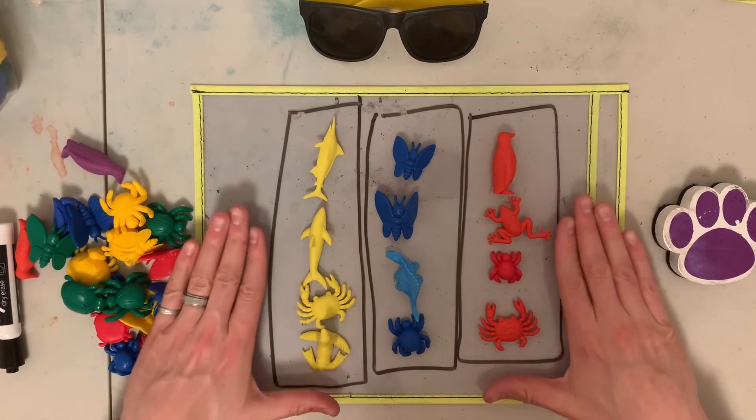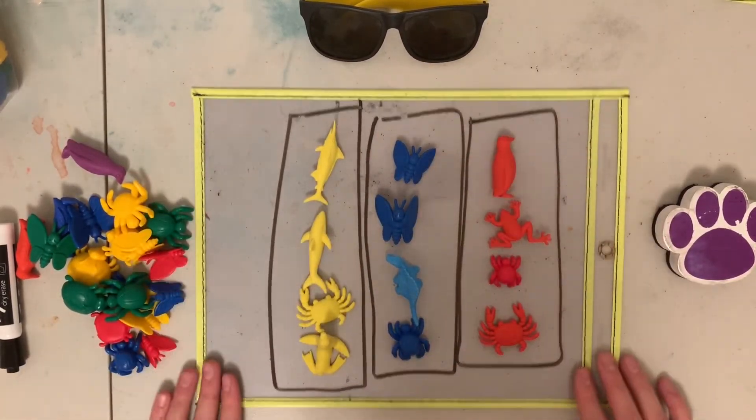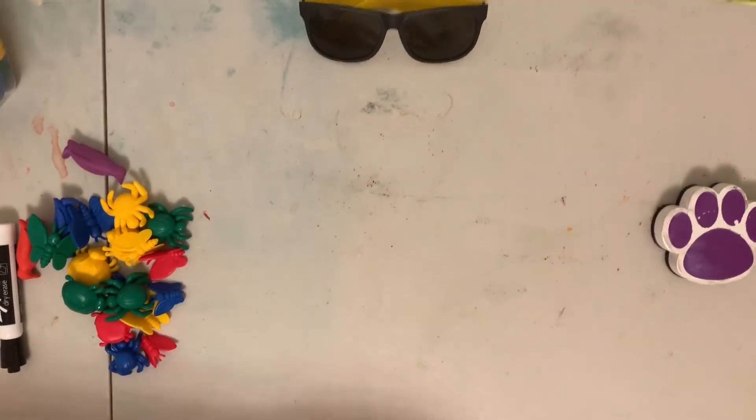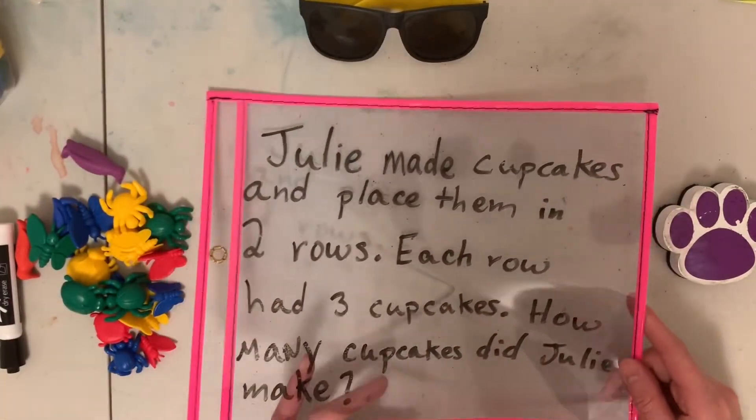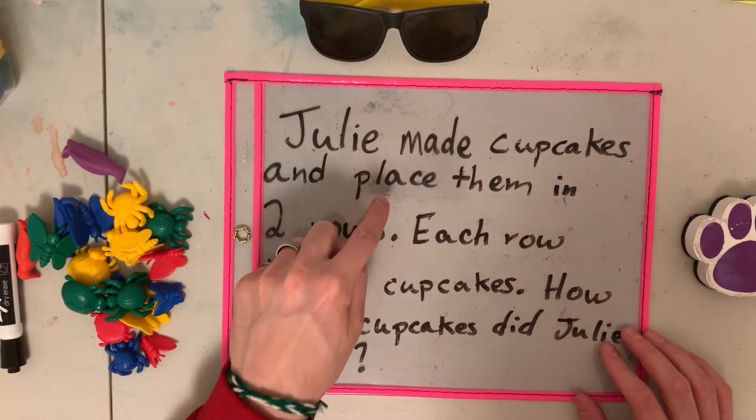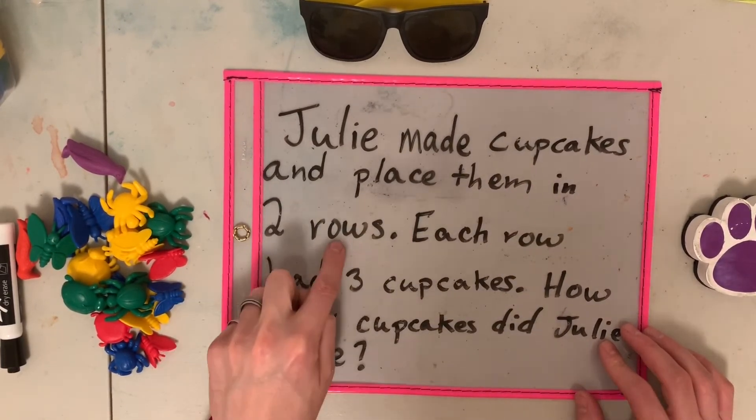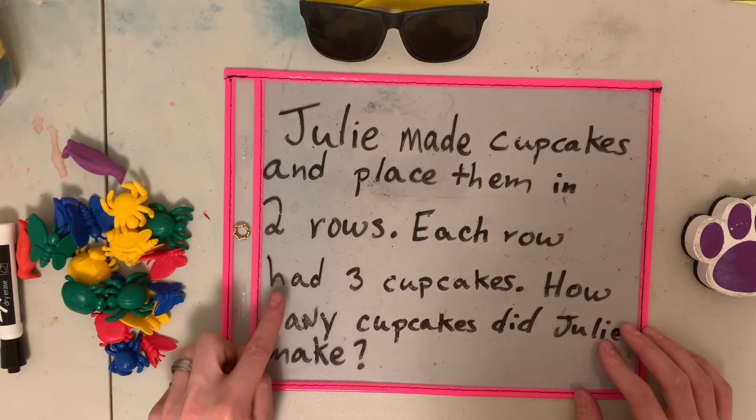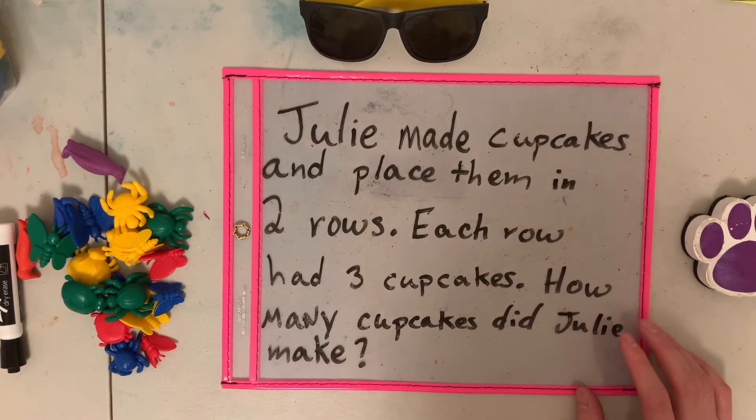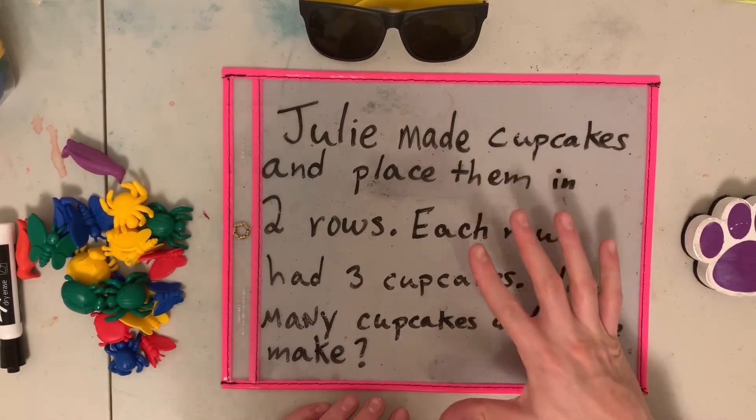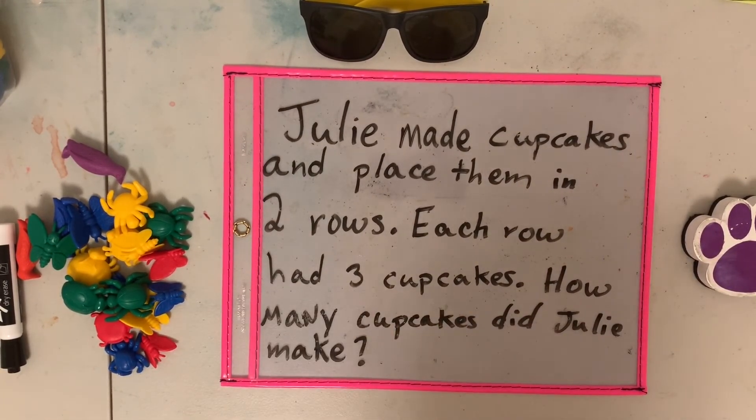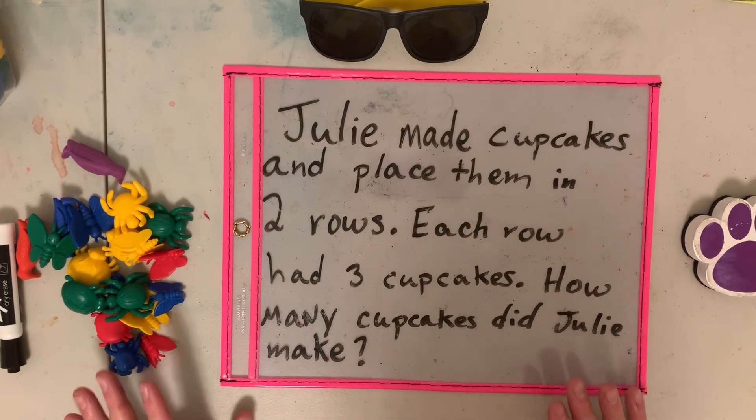So, you're going to do the same thing with your toys with another word problem. It's the same word problem, but with different numbers. Look over here. Again, Julie made cupcakes and placed them in two rows. Each row had three cupcakes. How many cupcakes did Julie make? Repito, vas a hacer lo mismo, pero vas a hacerlo con dos filas y tres cupcakes en cada fila. Muy bien. Esto es todo por hoy. Nos vemos mañana. Bye.